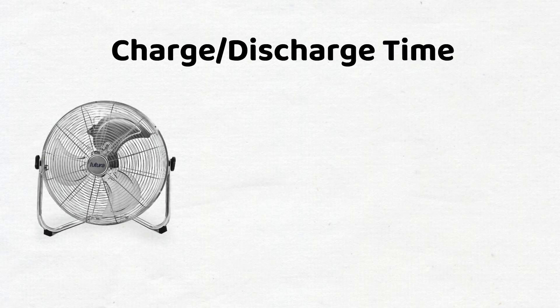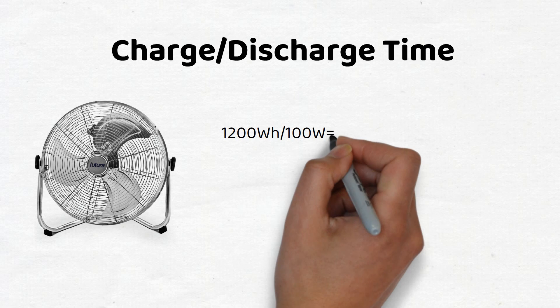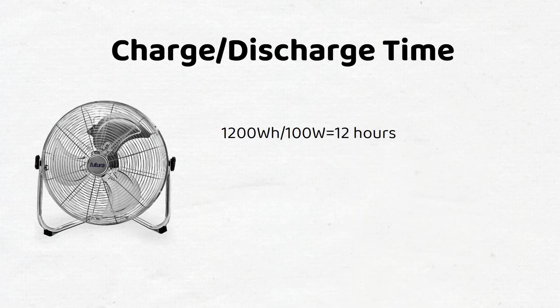This watt hour rating gives a clearer picture of how long a battery can power a device. If a fan requires 100 watts to run, the 1200 watt hour battery can theoretically power it for 12 hours, because 1200 watt hours divided by 100 watts equals 12 hours.